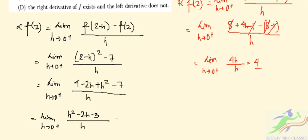Here you can see this doesn't exist because h squared minus 2h minus 3 is in the numerator and h is in the denominator, so it doesn't exist.